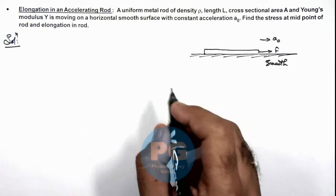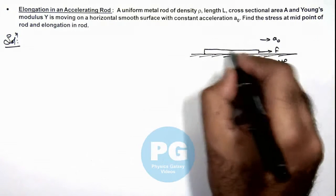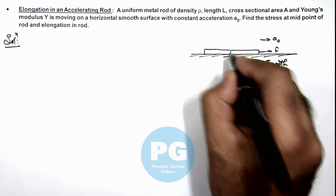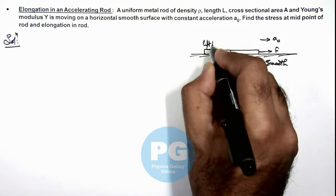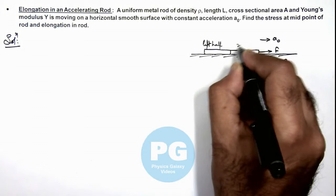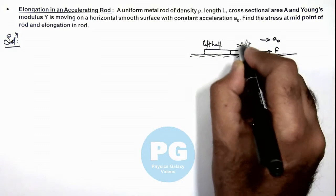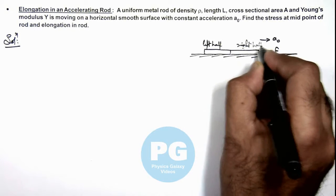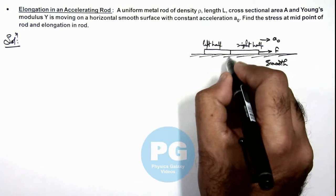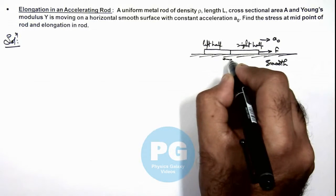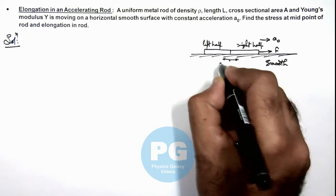We are required to find the stress at mid point of the rod, so at mid point if we divide the rod in two parts, this is left half of rod and this is right half of rod. Both will be of equal masses. In this situation we can consider the two parts will apply a tension T on each other.